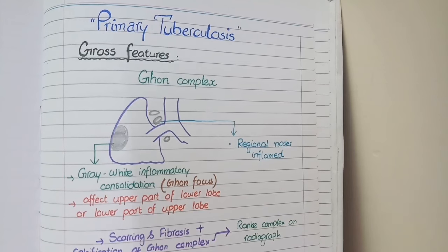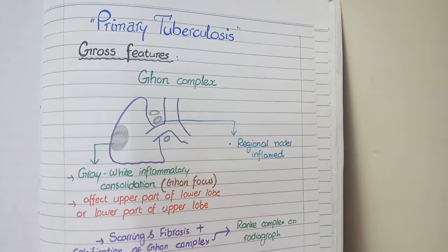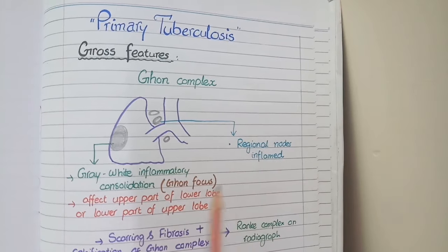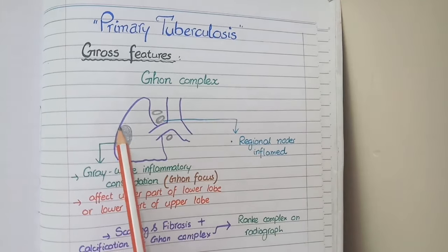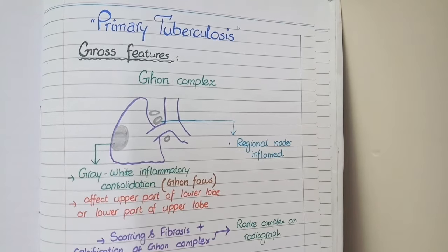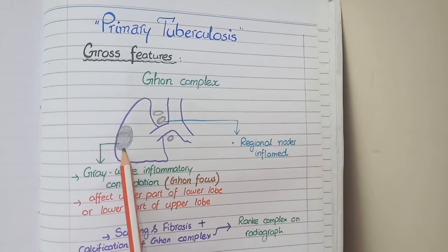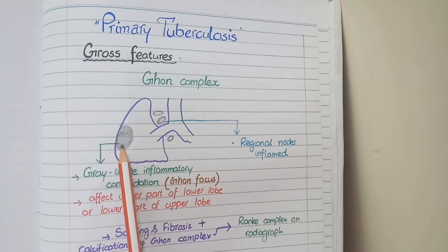Let's study primary tuberculosis. The gross lesions in primary tuberculosis are known as Ghon complex. Basically, Ghon complex is a combination of two things. The first thing is a grey-white inflammatory consolidated area of lungs known as Ghon focus, which is present in the lower parts of upper lobe or upper parts of lower lobe, basically at the center of lung.